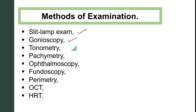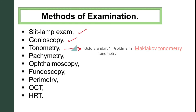Methods of examination include slit lamp technique, gonioscopy — specifically for looking at the anterior chamber angle — and tonometry. The gold standard is Goldmann tonometry, though in Ukraine the mostly used method is Maklakov tonometry. Other methods include pachymetry, ophthalmoscopy and fundoscopy, perimetry — specifically for measuring peripheral visual fields — optical coherence tomography (OCT), and Heidelberg Retinal Tomography (HRT).